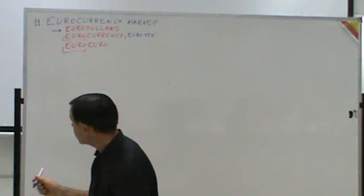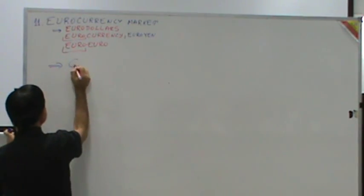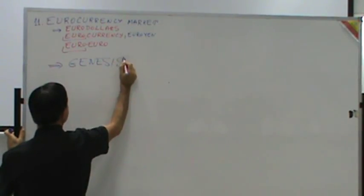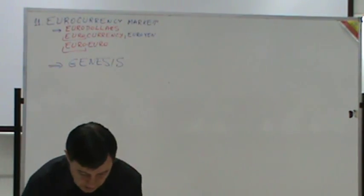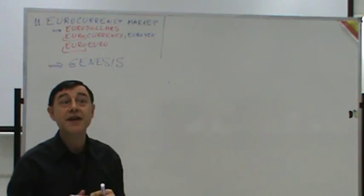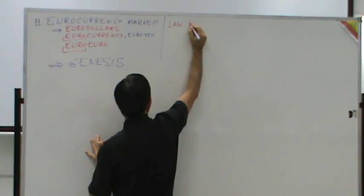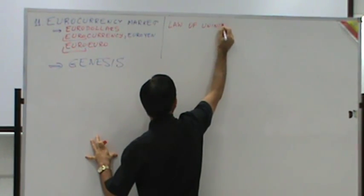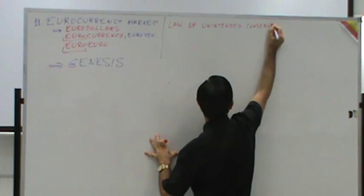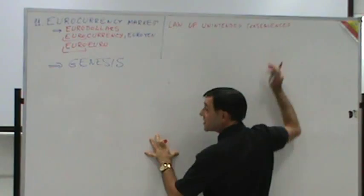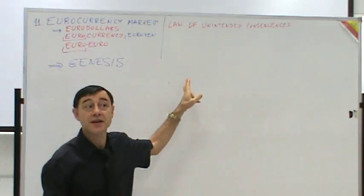The next topic is the birth or genesis of the euro currency market. Related to this is a concept written in red: the law of unintended consequences.